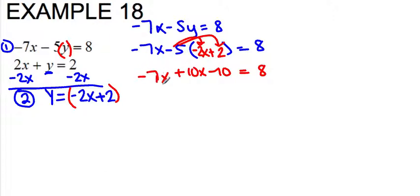I combine like terms. So I'm combining negative 7x plus 10x, which is 3x, minus 10 equals 8.